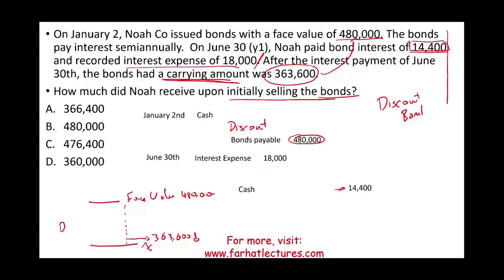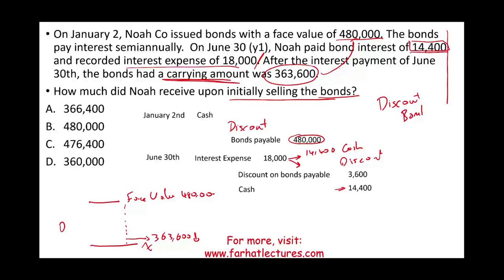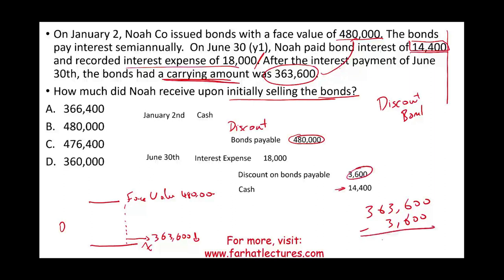How much was the discount amortized? If I paid $14,400 in cash and recorded interest expense of $18,000, the difference is $3,600 — that's the discount portion of the interest. So my bond carrying value prior to this payment was $363,600 minus $3,600, which means six months earlier the carrying value was $360,000. That's when I issued the bond, meaning I received cash of $360,000 and the total discount on the bond must be $120,000 ($480,000 minus $360,000).